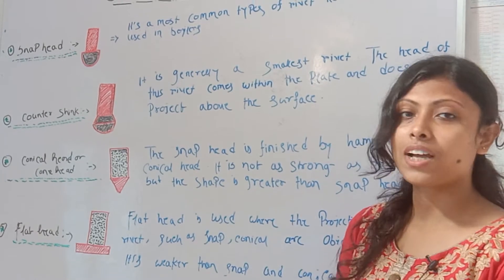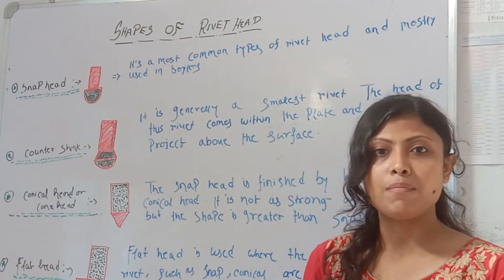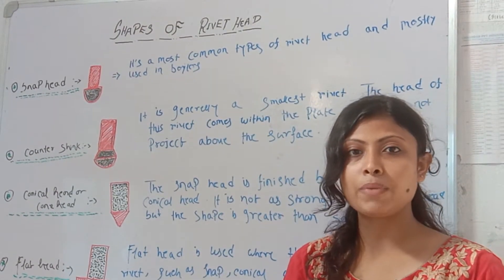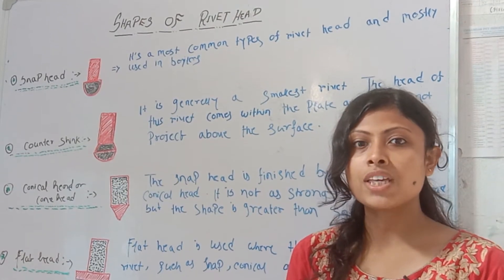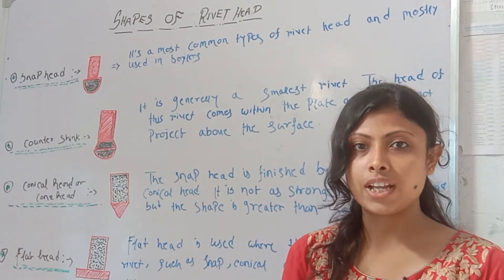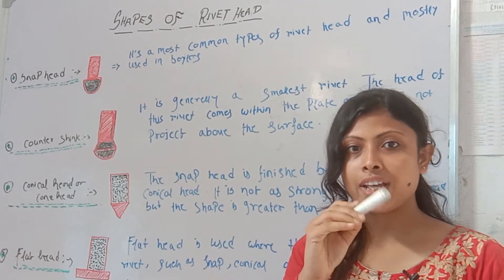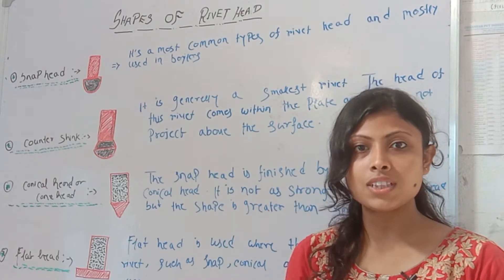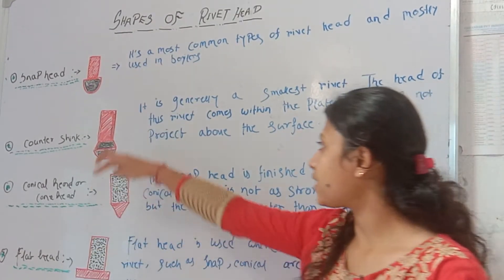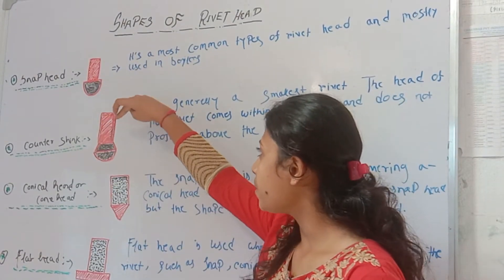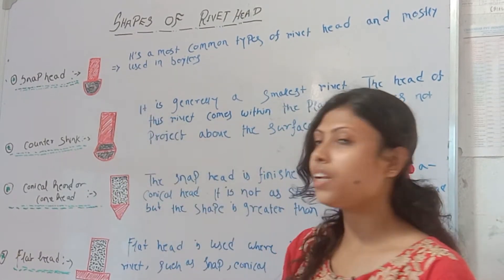Today I will explain the same rivet. A rivet has three parts. The first one is the head, the second one is the body, and the next one is the tail.